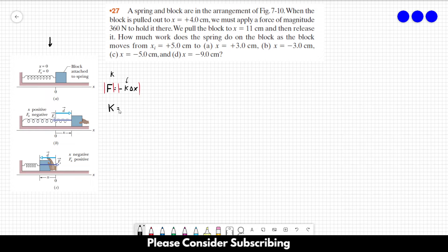So k equals the magnitude of the force divided by the magnitude of Δx. The force is 360 newtons and x = 4 cm or 0.04 meters. This gives us k = 9000 N/m. That's our spring constant.